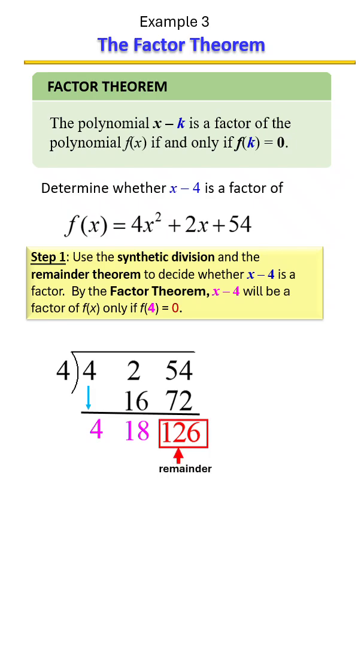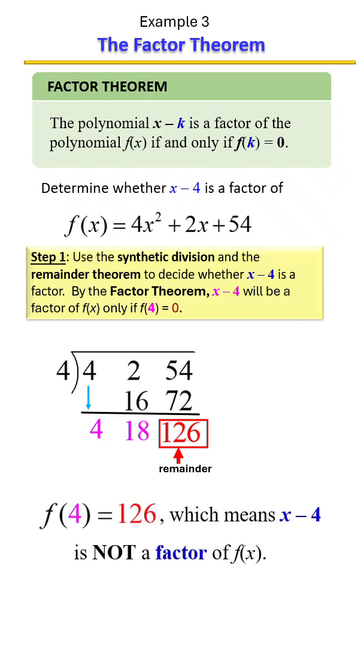The fact that we did not get a 0 out, that means that 4 is not a 0 of this polynomial function. And it also means that x minus 4 is not a factor of this polynomial function.